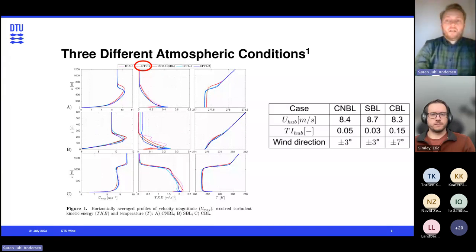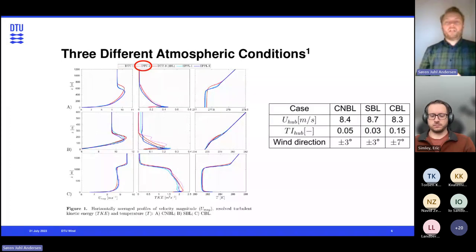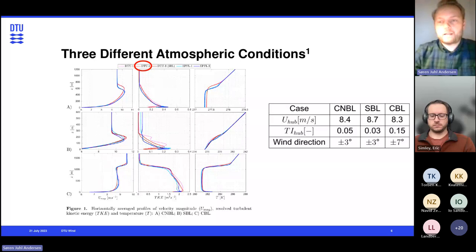So you can see that for the three different conditions, conventional neutral, stable, and convective, we have a hub height velocity of around 8.5 meters. We have turbulent intensities ranging from 3% to 15%, and then there's a standard deviation in the local wind speed at the hub height, ranging from plus minus 3 degrees to plus minus 7 degrees. So this talks about some of the differences in variability for these different atmospheric conditions.